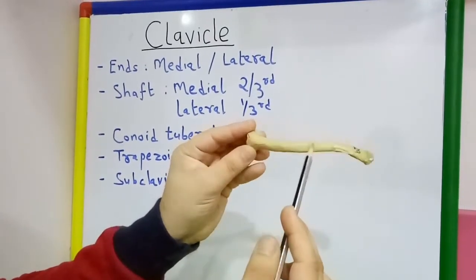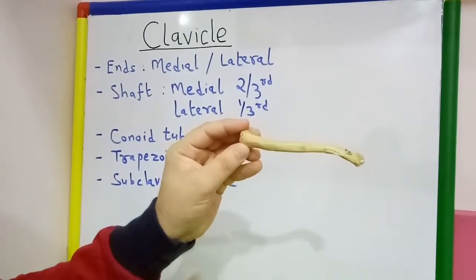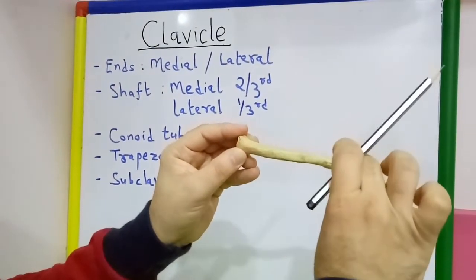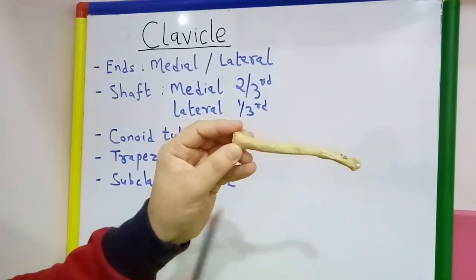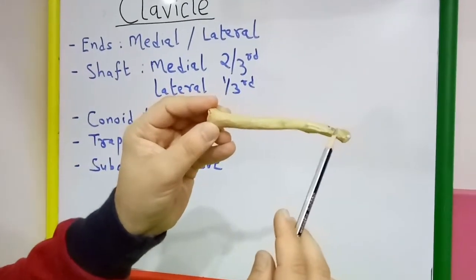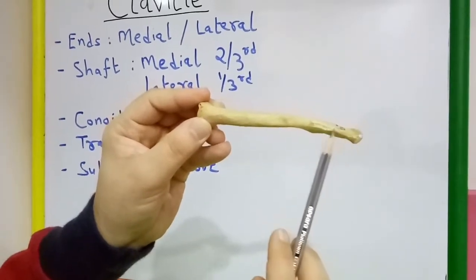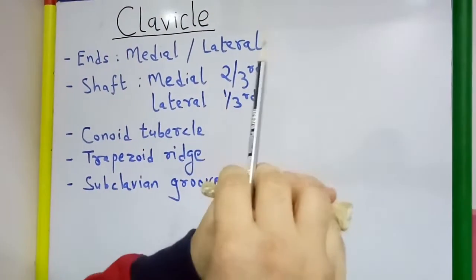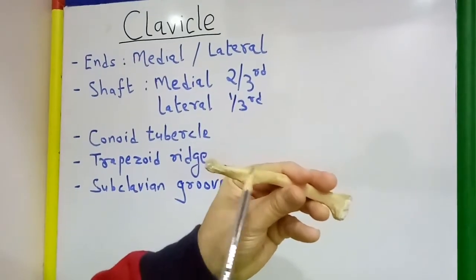So there are four surfaces in the medial two-third of the shaft, whereas the lateral one-third of the shaft is flattened from above downwards so that there are two borders: the anterior border, which is concave forward, and the posterior border, which is convex backwards.